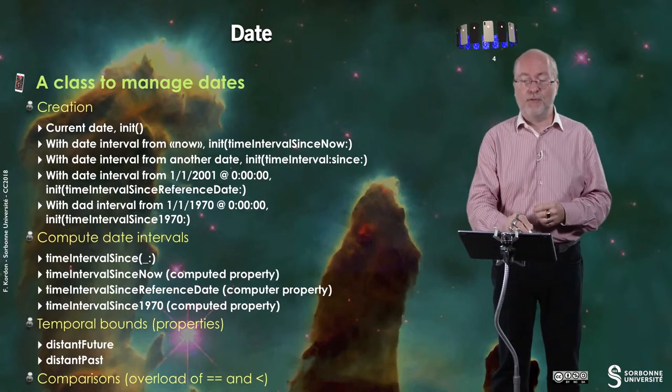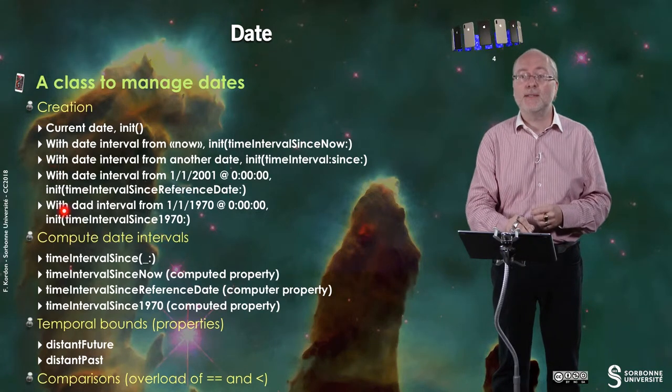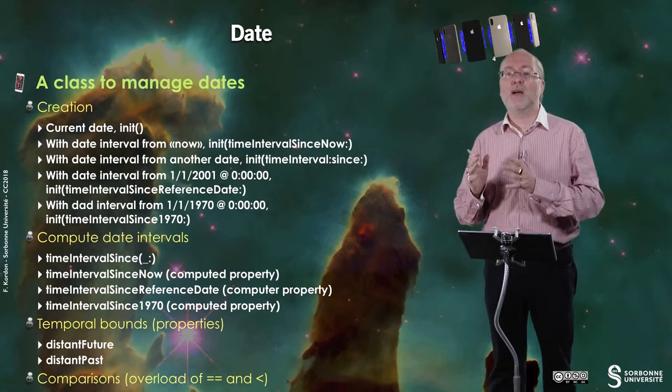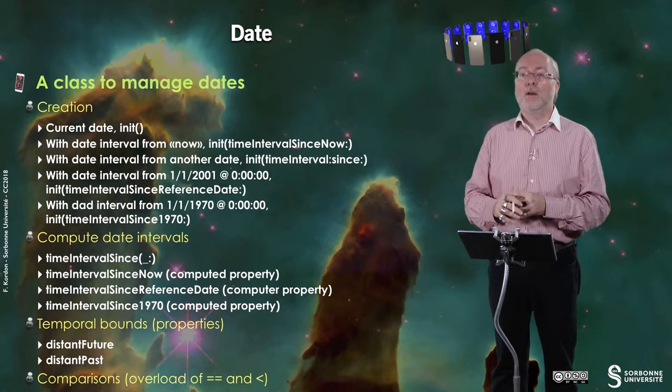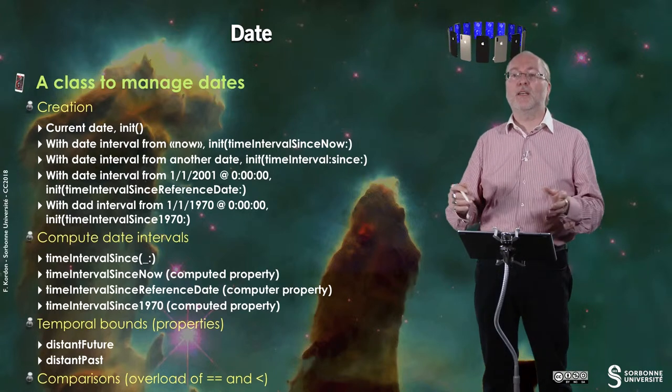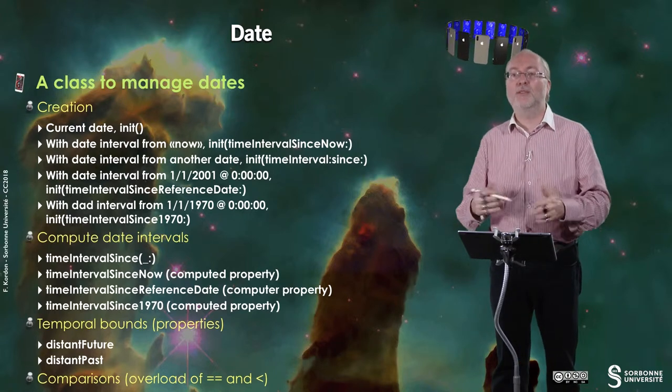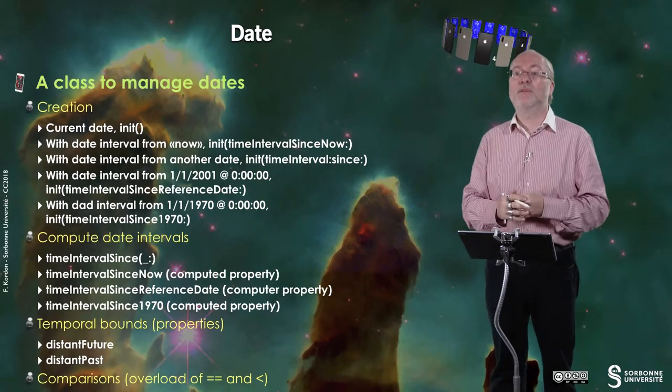To manage date, you have a dedicated class in Swift called Date. It will work similarly in Objective C, but it's called NSDate, which is not surprising. You can create dates. So you have various ways to create dates. Most of these are class methods. If you do an init without anything, you create the current date. So it's today, now.